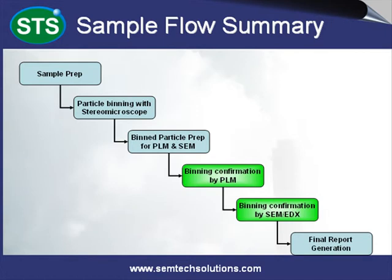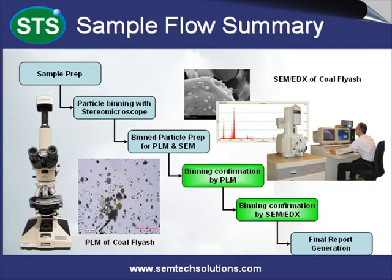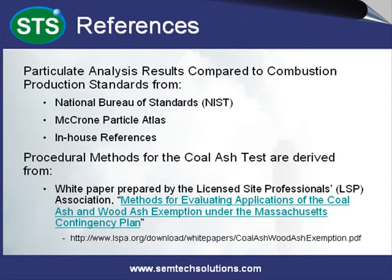Up until this point, particle classification and associated binning has depended largely on the experience and skill of the analyst using a stereo microscope. The analyst's skills are confirmed against industry standard guides and references. The two main references we use for particle analysis with regards to the coal ash test are obtained from NIST and McCrone. The procedural methods we use for the coal ash test are largely taken from a whitepaper titled Methods for Evaluating Applications of the Coal Ash and Wood Ash Exemption under the Massachusetts Contingency Plan. This whitepaper can be obtained from the lspa.org website.